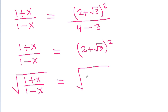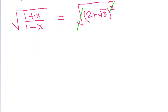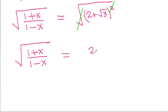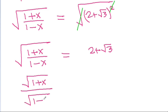The square and the square root will get cancelled, and we get square root of (1 plus x) by (1 minus x) is equal to 2 plus root 3. It is square root of (1 plus x) by square root of (1 minus x) is equal to (2 plus root 3) by 1.